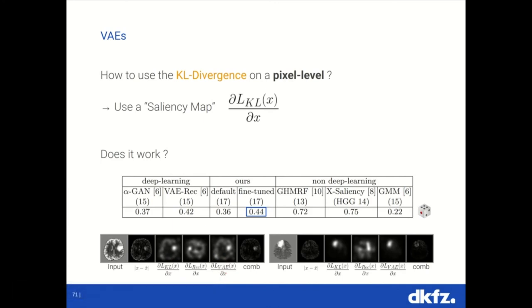So, therefore, we also proposed a new thing called COMB, or combination, where instead of just using the derivative, we use the KL loss and multiply it with the reconstruction loss directly. Since this kind of equally weighs those, and removes or kind of removes some of the noisiness from the gradients, or circumvents it.